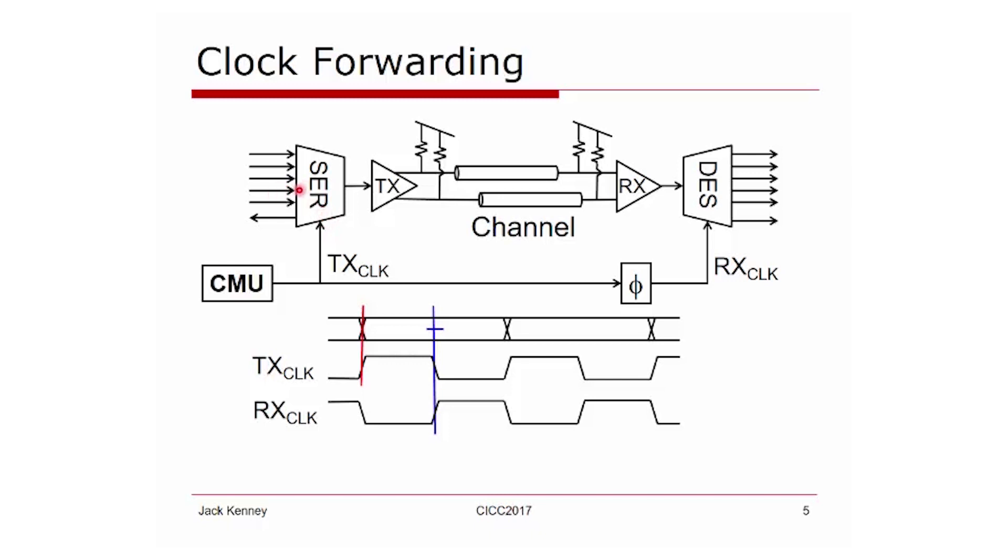A serializer does an n-bit to 1-bit conversion. You can imagine we're sending 12.5 gigabit per second data between the transmitter and the receiver. On the receiver, we have some programmable phase shifter that provides a receive clock to a deserializer. The deserializer does a 1-bit to n-bit parallel word conversion.